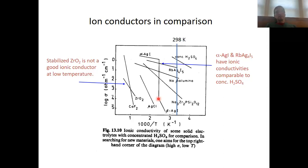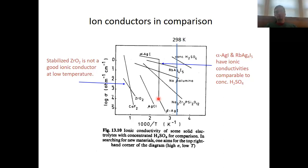That indicates that the crystal structure plays a very important role for ion conductivity. In order to understand ion conductivity in extended solids, we have to closely look at the crystal structures and how they can explain high and low ionic conductivity. Much of that has to do with defects — the more defects a crystal structure has, the better the ionic conductivity tends to be.